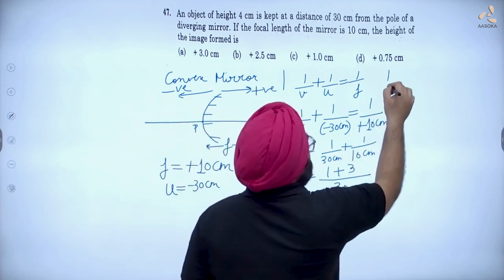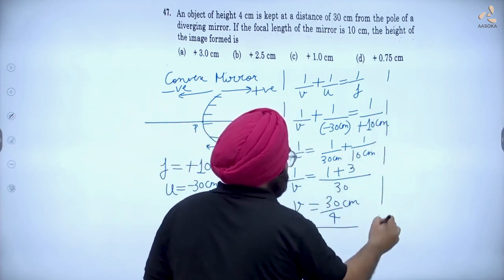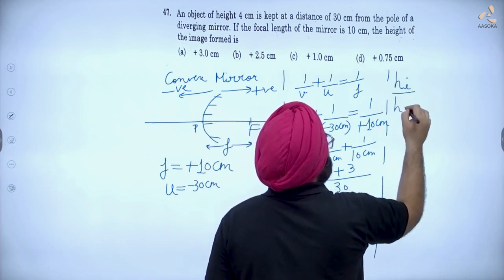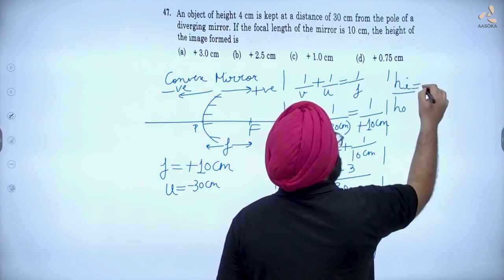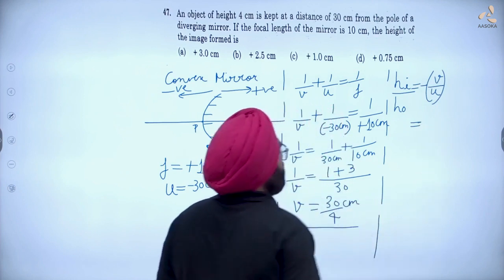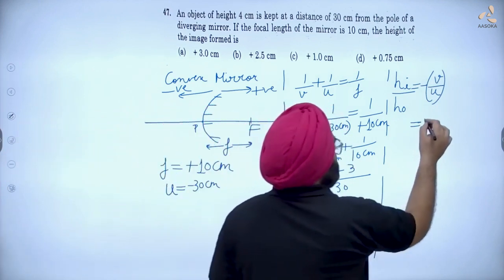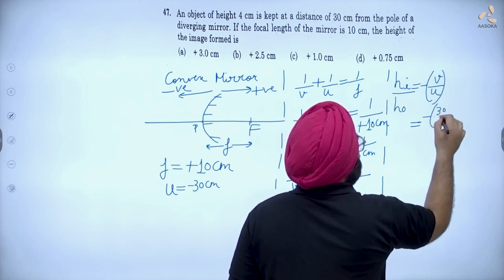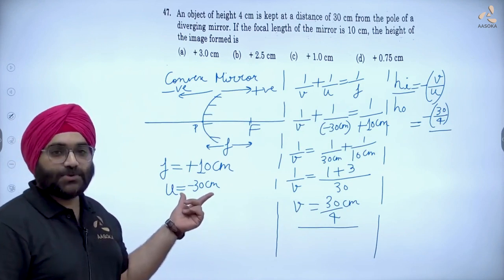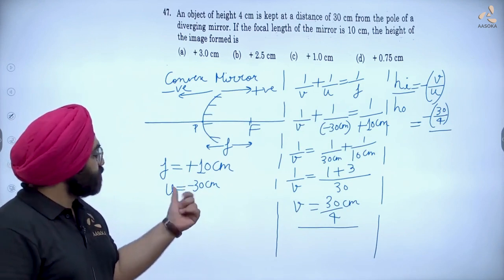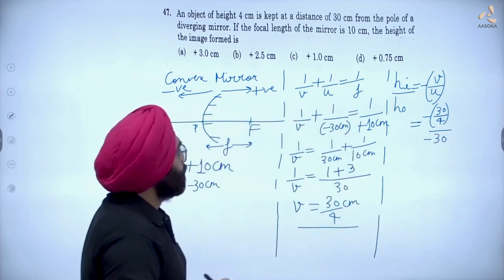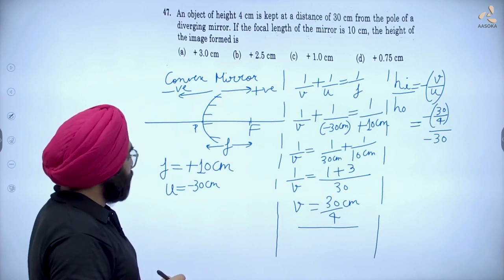इसके बाद हम magnification का relation लगाएंगे। Mirror के लिए magnification का relation: height of image divided by height of object = -v/u. Value put करते हैं — v का answer है 30/4, तो यह आएगा minus 30/4, divided by u की value जो है minus 30।